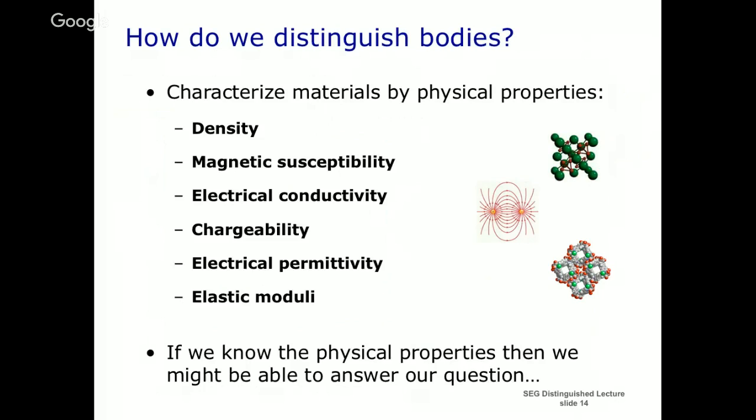So why does geophysics work like this, and how is it that we've come to use geophysics to characterize bodies? The idea is basically this: we've got a whole bunch of different physical properties.